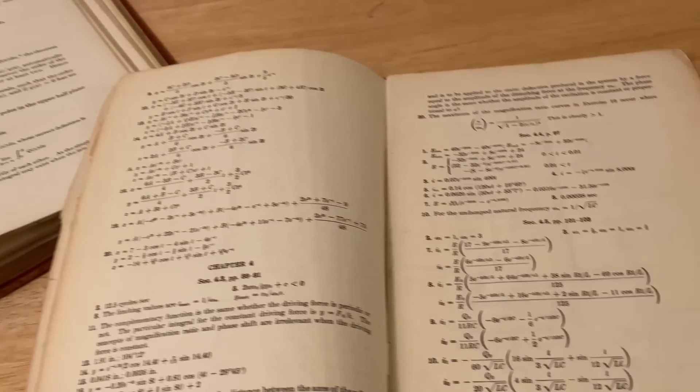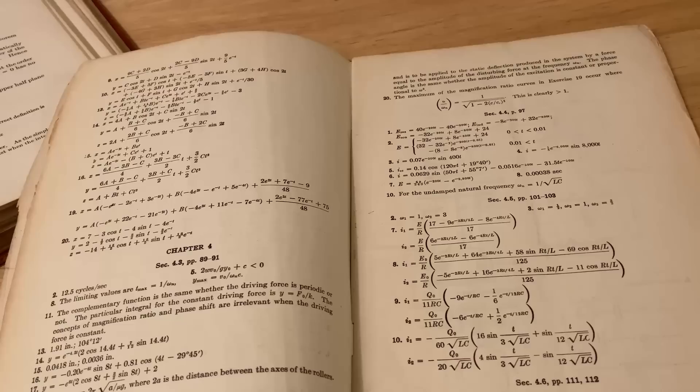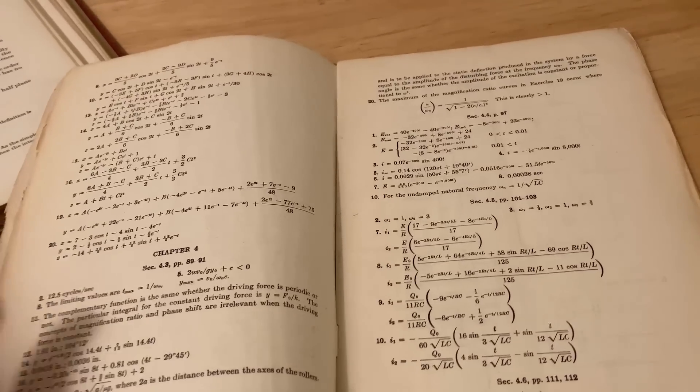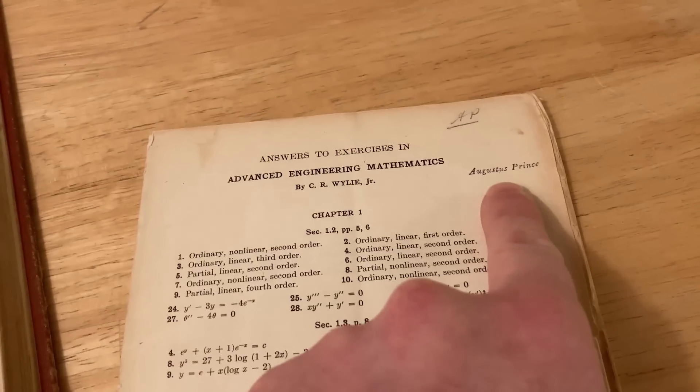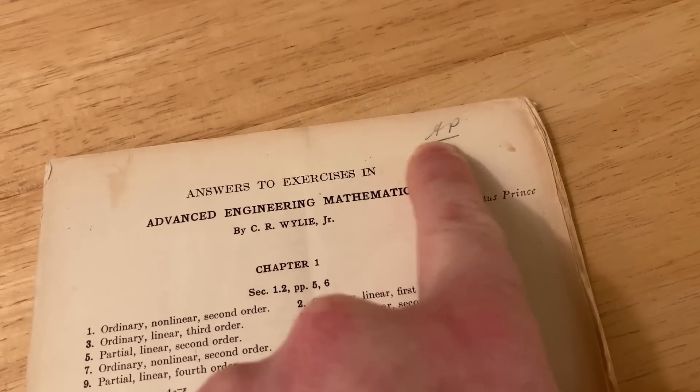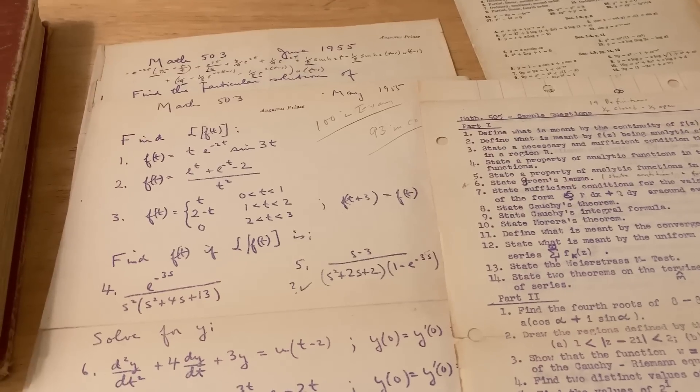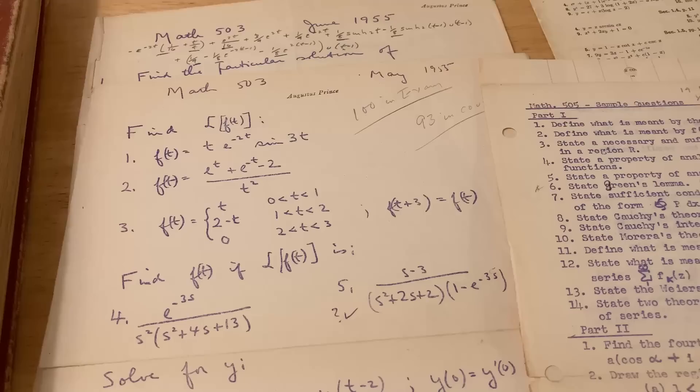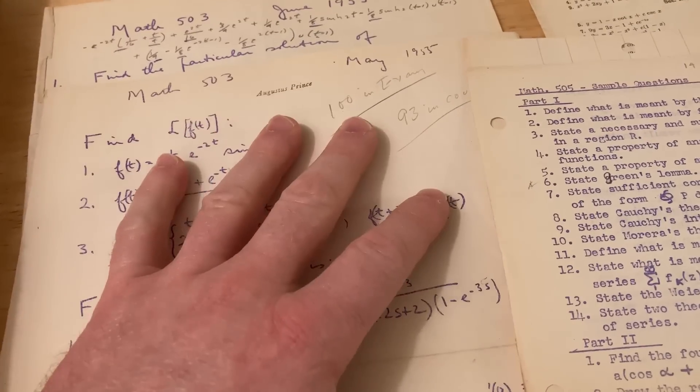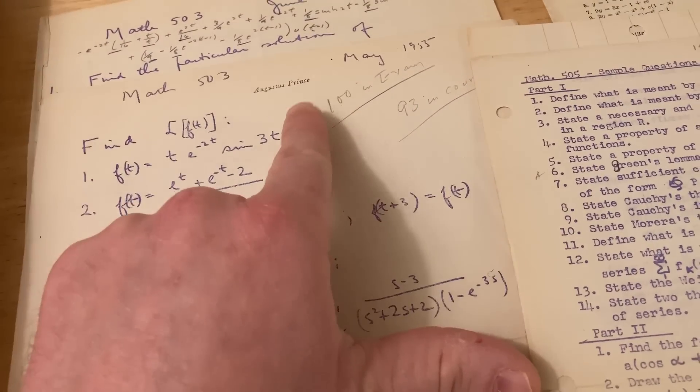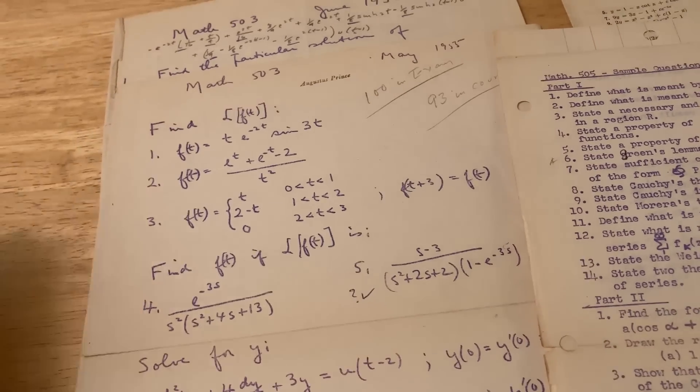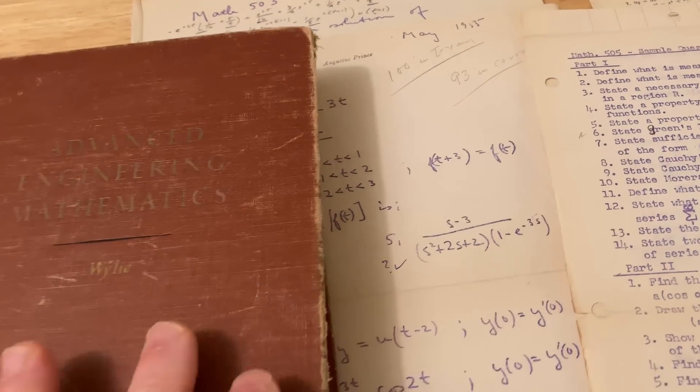I don't know if you can find this on the internet or if you can buy a solutions manual for the book online. This is super cool because I have this book and then I also have these solutions. He's got a stamp - Augustus Prince - and he uses his initials AP. These old papers from the past with solutions by Augustus Prince are amazing.